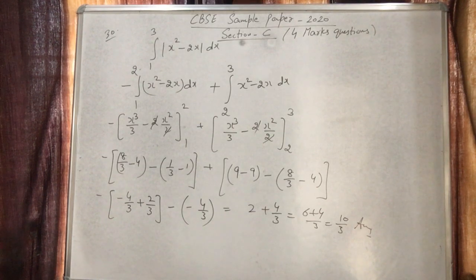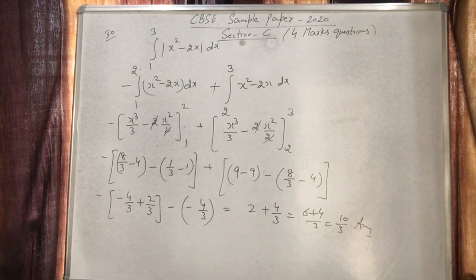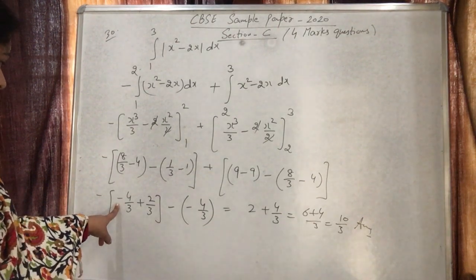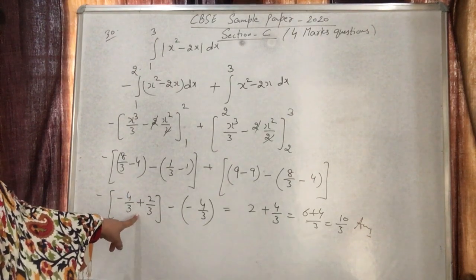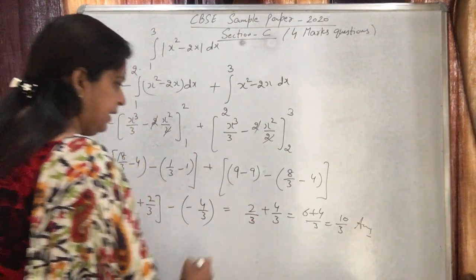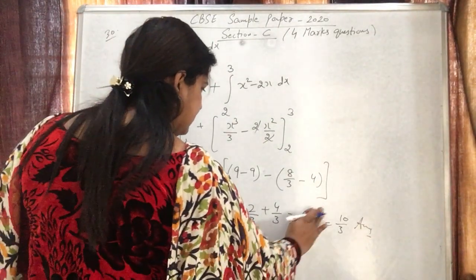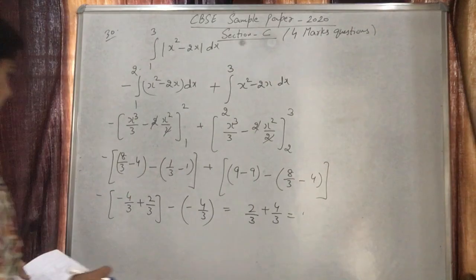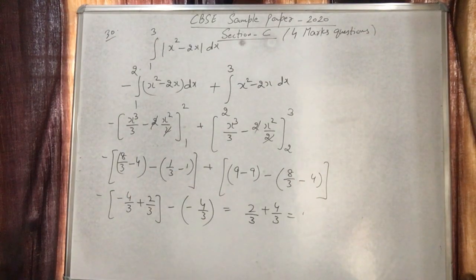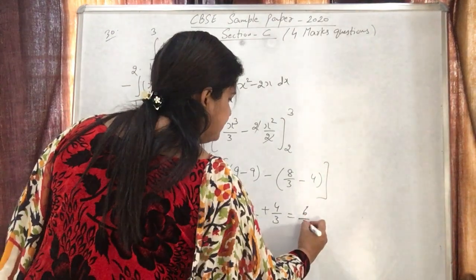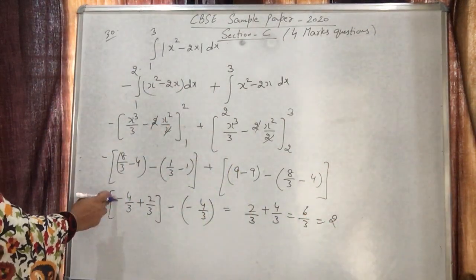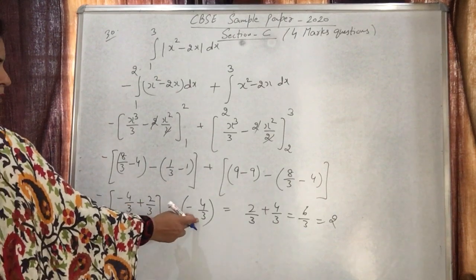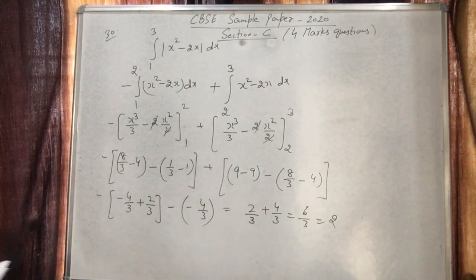After careful simplification taking LCM = 3 across all terms, combining the fractions gives 6/3 = 2 from one group and 4/3 from another. The final answer for the definite integral is 2. That completes question number 30.